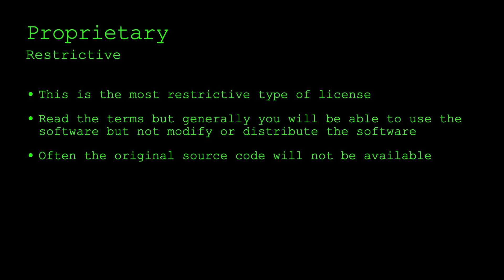The final type of software license is proprietary, which is quite restrictive. You can read the terms of each individual license, but generally you'll be able to use the software but not modify or redistribute it, and often the original source code will not be available. For example, if I created an app I might license it under a proprietary license — I might grant you permission to use it, but I wouldn't let you see my source code.